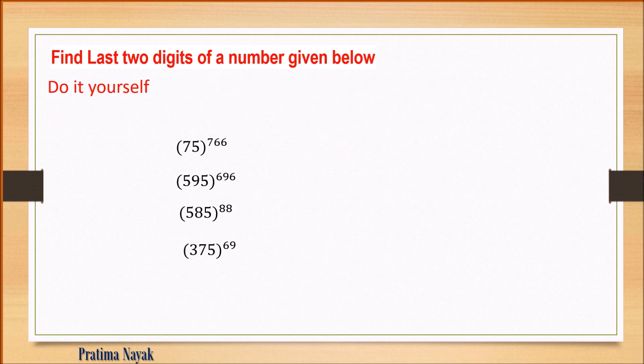Practice problems for category two: find the last two digits of 75 to the power 766, 595 to the power 969, and 6585 to the power 8837.